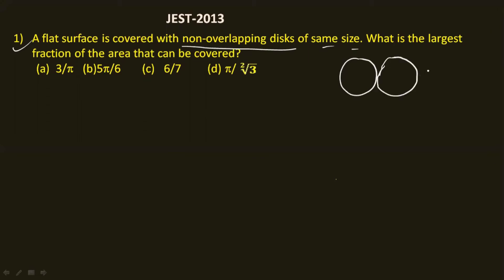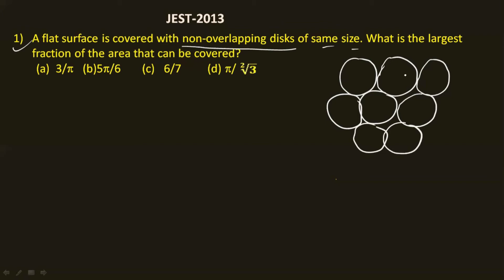So I'll draw the disks here — these are the centers of the disks. When you join all the centers of the disks you get a hexagonal lattice. Joining these centers further gives you six equilateral triangles. This length is the radius r, and the distance between two centers of the disk is a = 2r.